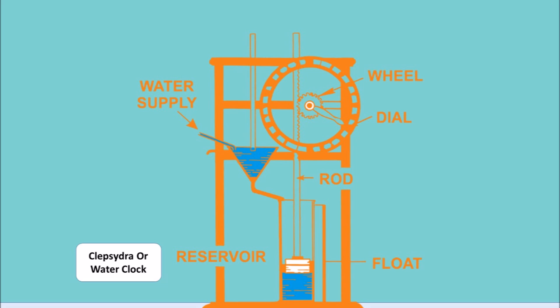Water clocks were fitted with floats that supported a pointer that rose with the water level in the lower chamber. The pointer thus automatically indicated the number of each hour. Water clocks were messy and eventually water spilled out and had to be mopped.